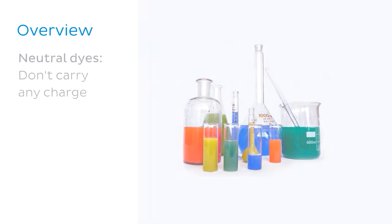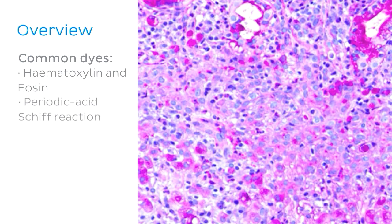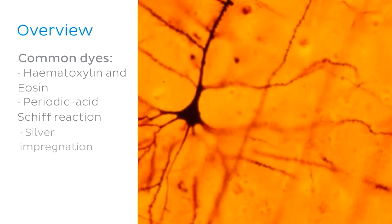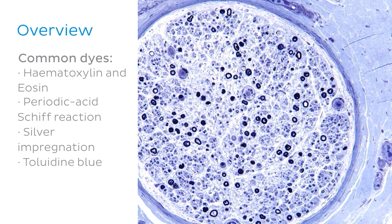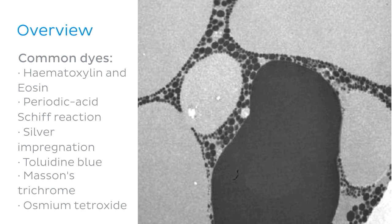Now let's move on to look at a few brief examples of histological dyes that are used to visualize cellular structures. In this tutorial we will look at a few of the most common dyes used in histology, namely hematoxylin and eosin, periodic acid-Schiff reaction, silver impregnation, toluidine blue, Masson's trichrome, and osmium tetroxide.